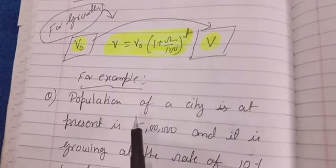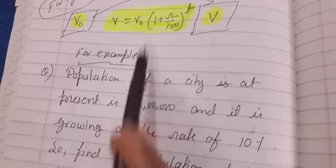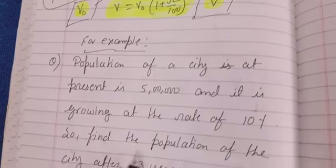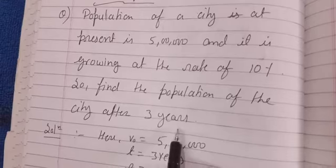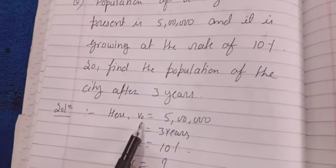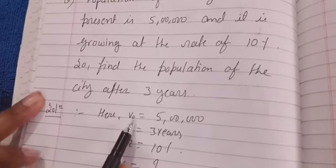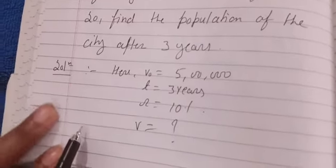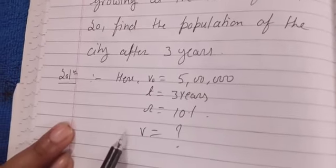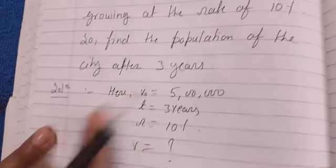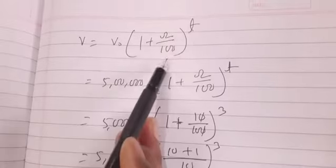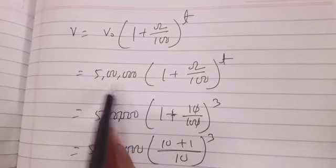I have used an example to explain the use of this formula. The population of a city at present is 5 lakh and it is growing at the rate of 10 percent. Find the population of the city after 3 years. So: initial population V₀ = 5 lakh, t = 3 years, growth rate r = 10%. Therefore, population of the city after 3 years: V = ? We put the values into the formula: V = V₀ × (1 + r/100)^t, with V₀ = 5 lakh.